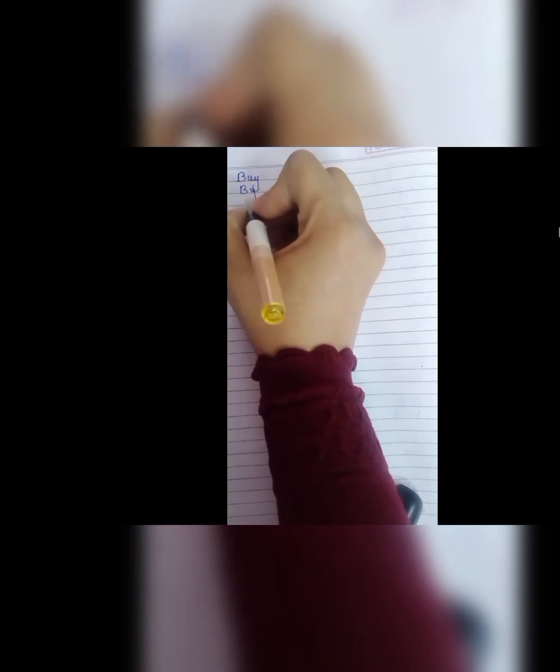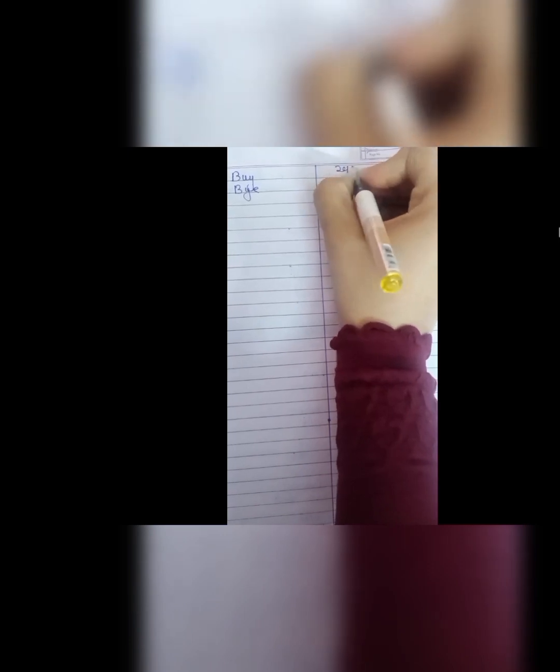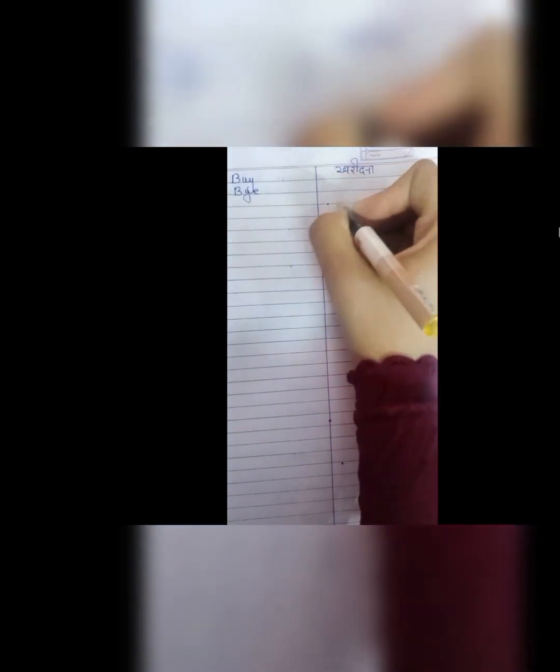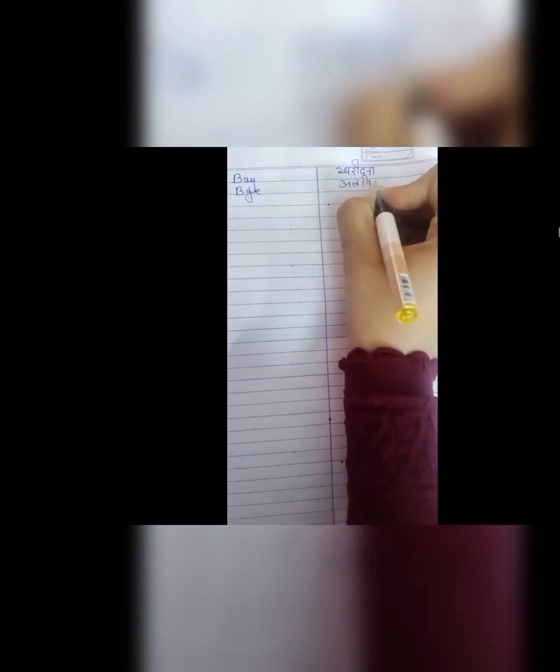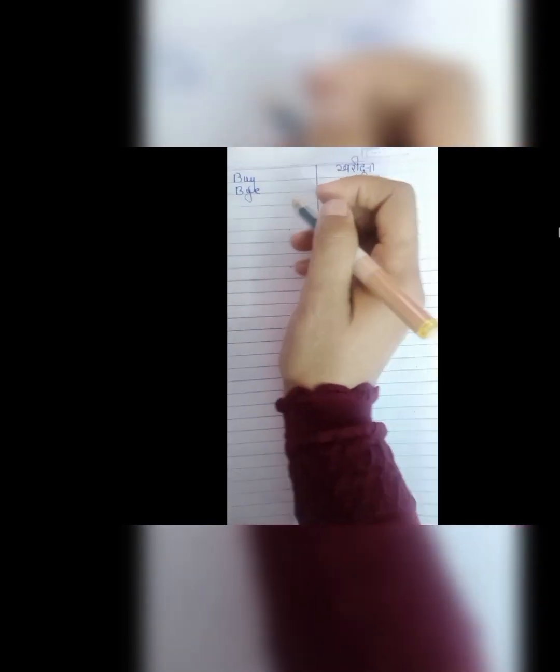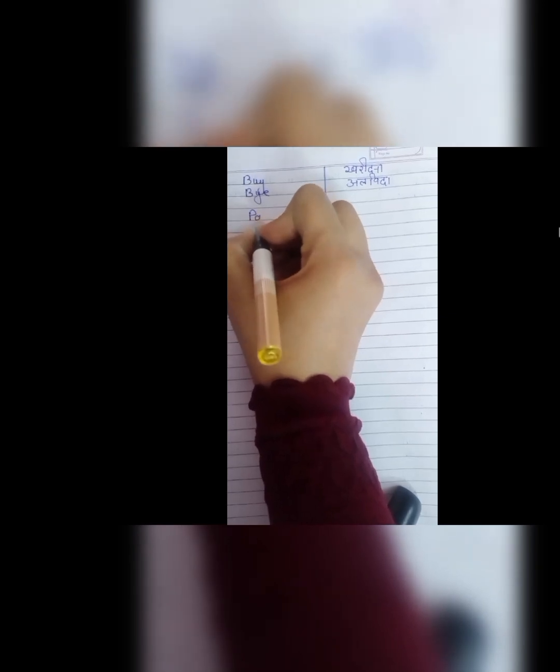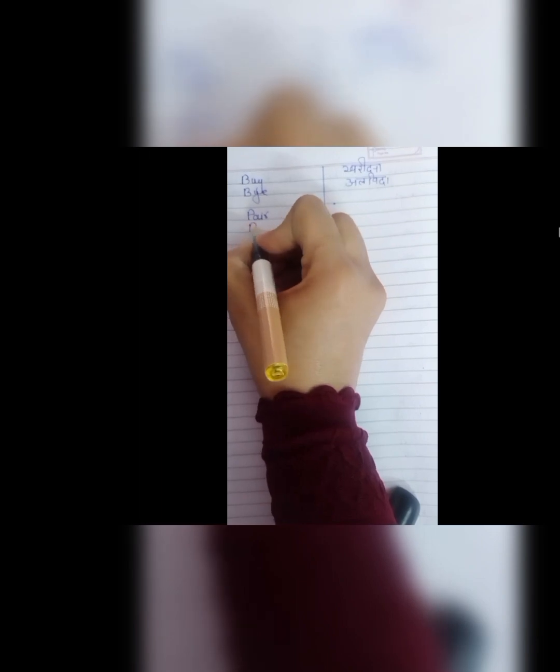Next is buy and bye. Buy B, U, Y, buy means kharidna. Koi chiz jab hum market me jaate hain toh koi chiz hum kharidte hain. I have to buy this for my child. Next iska homophone hai bye B, Y, E, bye. Jab hum kisi se alvida lete hain toh usako jho bye karte hain woh bye B, Y, E, bye.